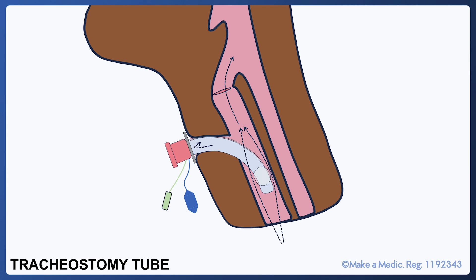This image should hopefully make it clear why it's important that the cuff is deflated. If it was not deflated, then air would only be able to go into the lungs through the tracheostomy tube and cannot come out because the valve is in place.